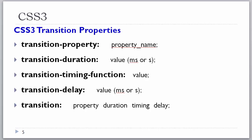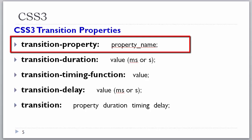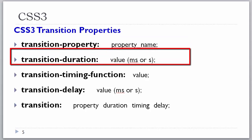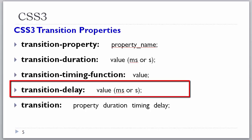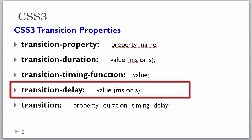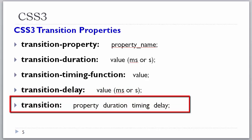In CSS3 there are several new properties that relate to transitions. We have the transition-property, set to the name of the property we'd like to transition, such as width or background-color. The transition-duration, set to a value like 0.5 seconds or 2 seconds. The transition-timing-function, where the default is ease. The transition-delay, which takes a time unit. And then there is the transition shorthand, which is very convenient considering we have to use vendor prefixes for all of these. The shorthand takes the property, duration, timing, and delay — and they are not comma-separated.